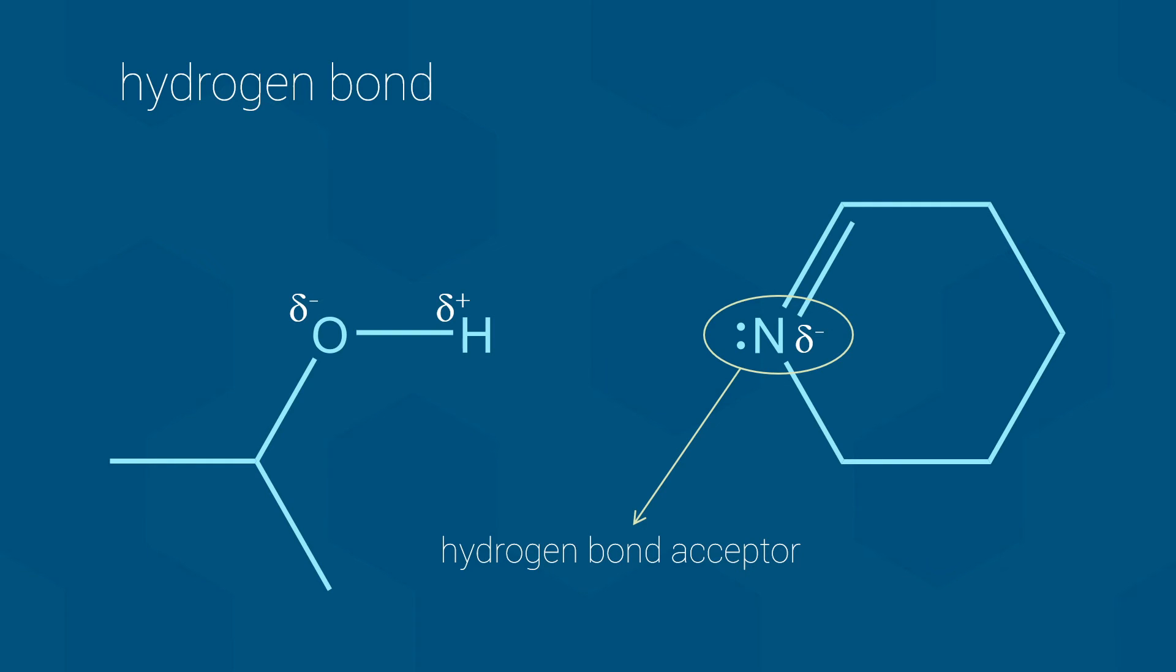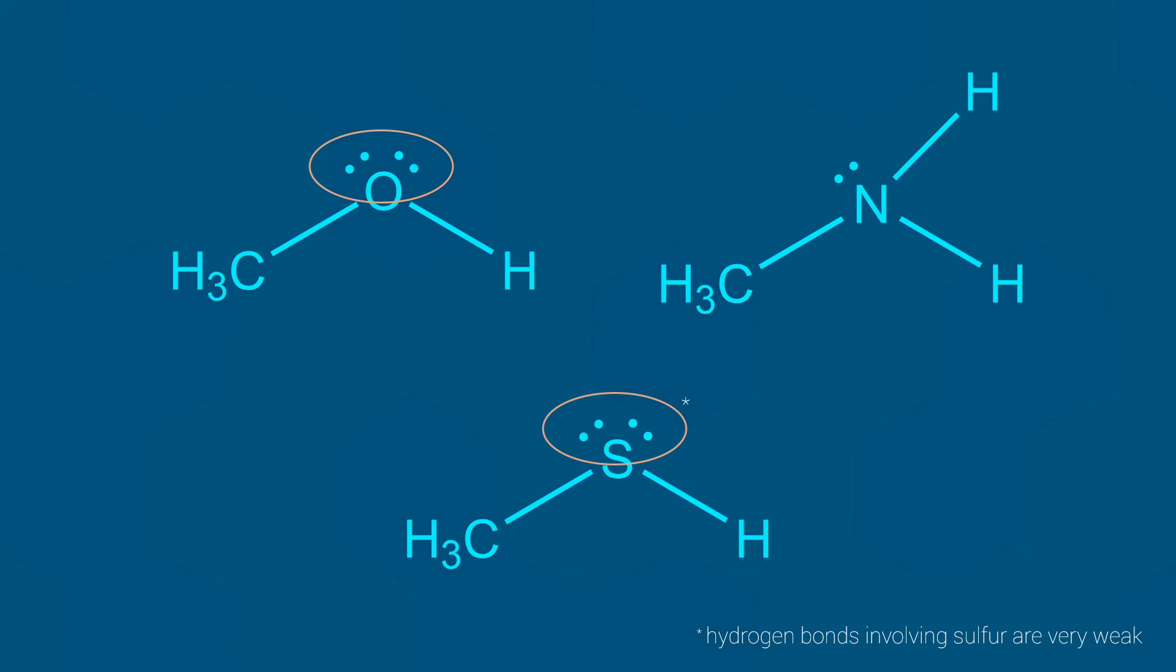Oh, and by the way, if you are wondering which atoms have lone pairs of electrons available for hydrogen bonding, we only have to worry about three of them. Oxygen and sulfur usually have two lone pairs of electrons available to accept hydrogen bonds, while nitrogen usually has one.